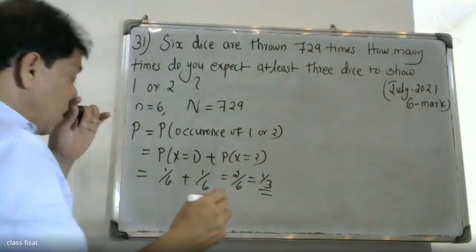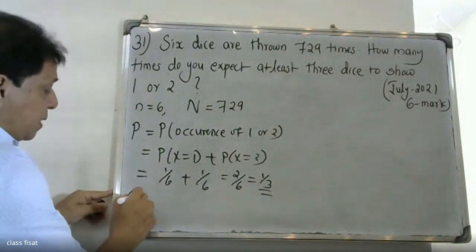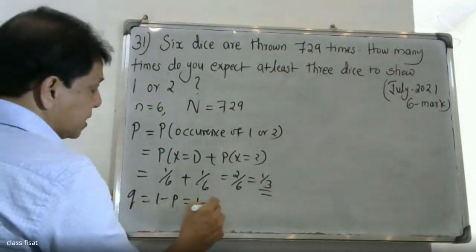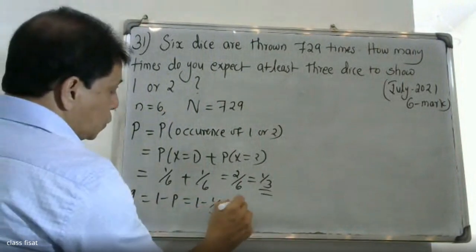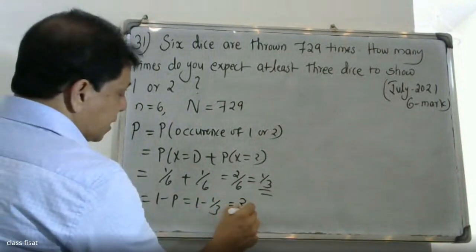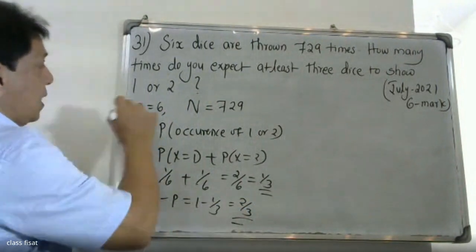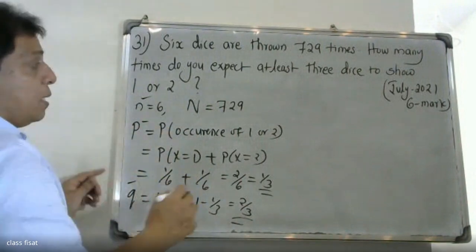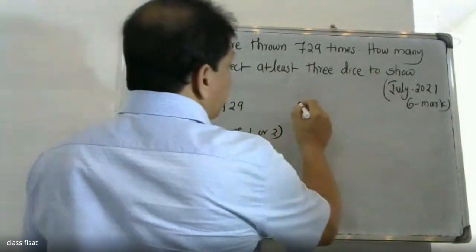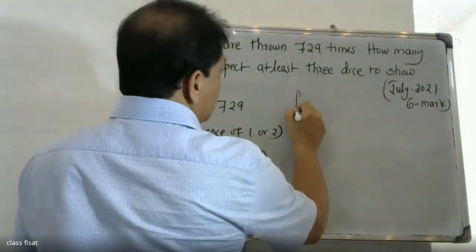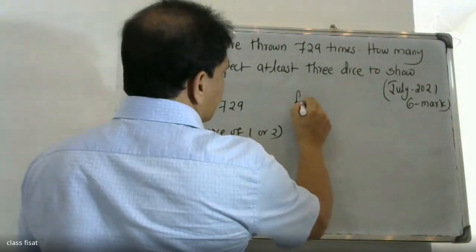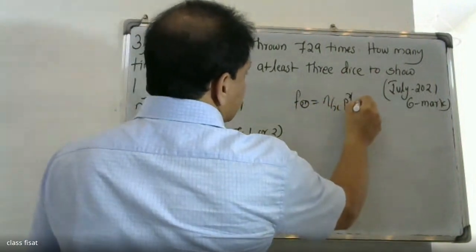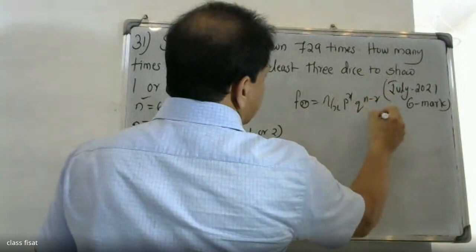So P is equal to 1/3, and Q is equal to 1 minus P, which equals 2/3. For the binomial distribution, N is equal to 6. The formula is: N C X, P raised to X, Q raised to N minus X, where X equals 0, 1, 2, ...